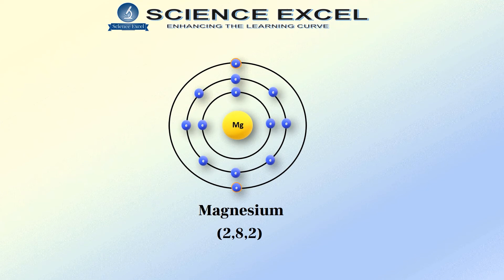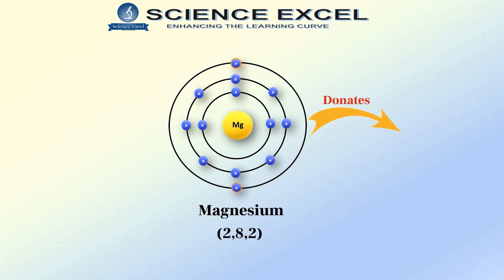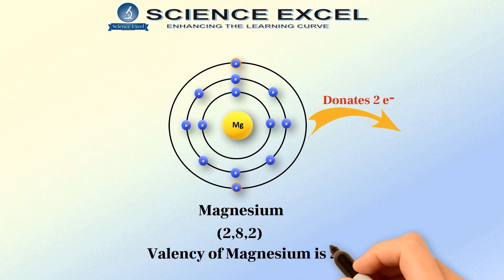So, here instead of gaining electrons from any other atom, magnesium will donate its electrons to attain stability. Hence, magnesium donates its 2 valence electrons as gaining 6 electrons from any other atom is difficult and thus completes its octet. So, the valency of magnesium is 2.